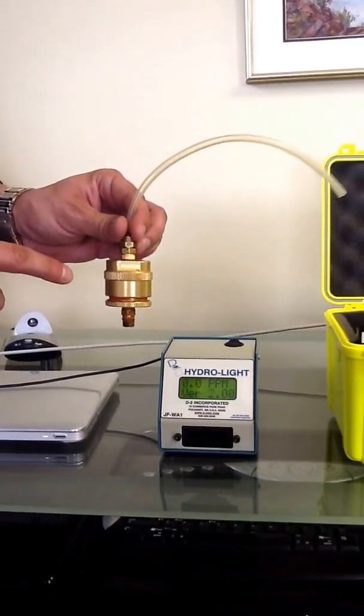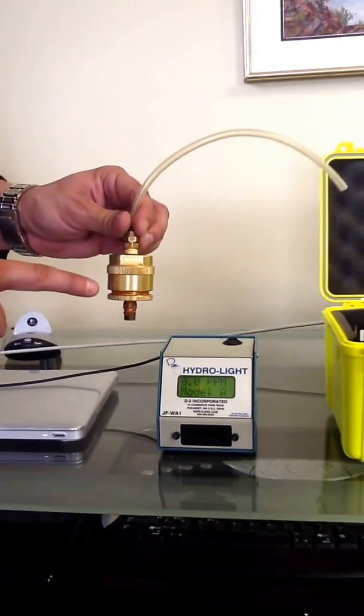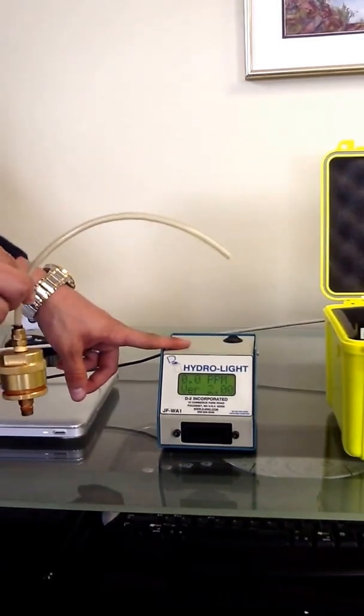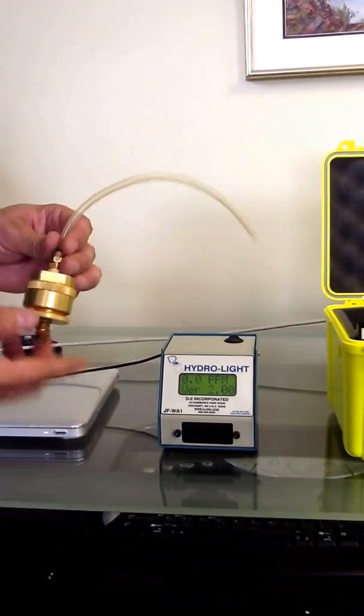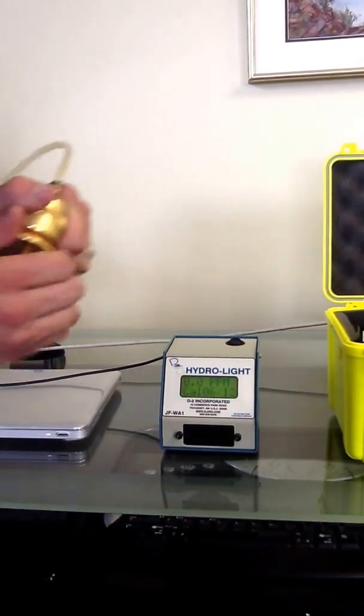Any undissolved free water in the fuel will interact with the color of the pad, changing the fluorazine dye. And our device is going to read that change in the color. So as you can see here, we've already run this pad. I'm going to take it out of the device.